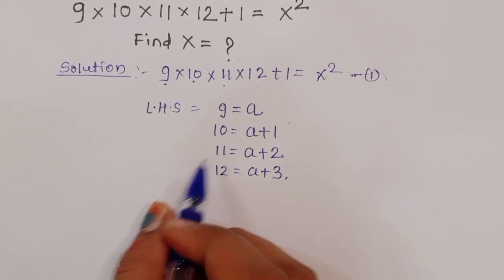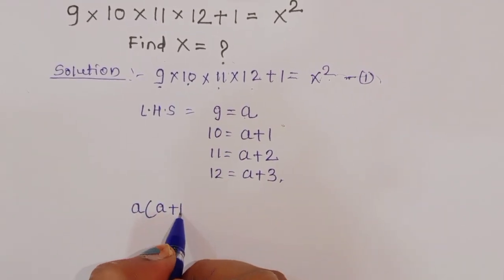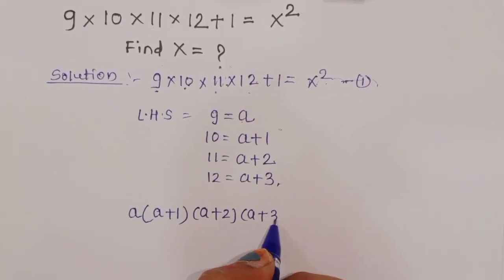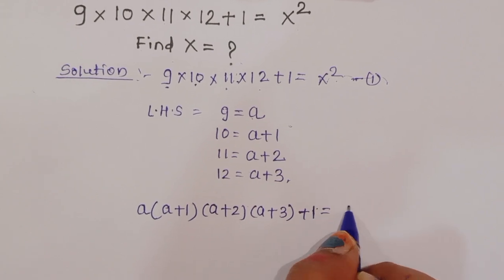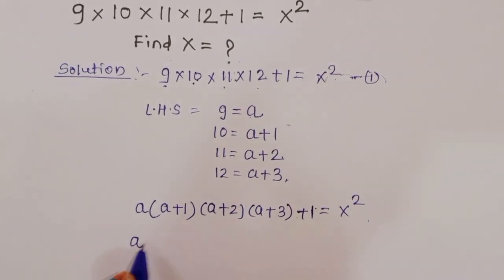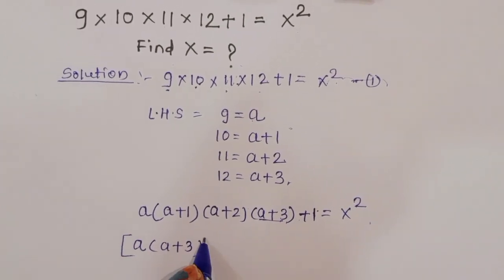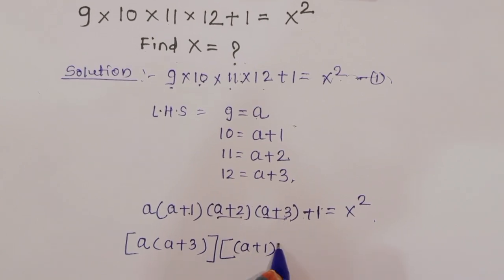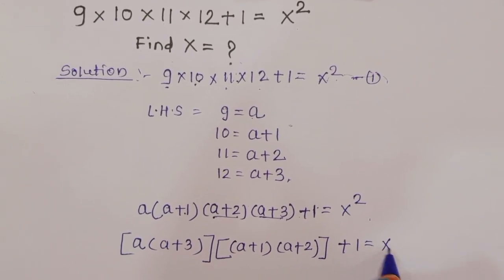We get: a times (a+1) times (a+2) times (a+3) plus 1 equals x squared. Now rearranging the terms, we pair a with (a+3), and (a+1) with (a+2): so a(a+3) times (a+1)(a+2) plus 1 equals x squared.